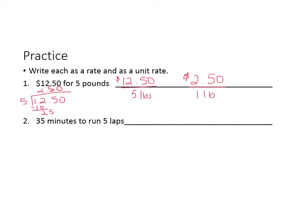Number two is 35 minutes to run five laps. As a rate, you would write that as 35 minutes for every five laps.